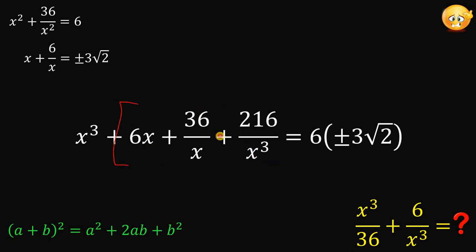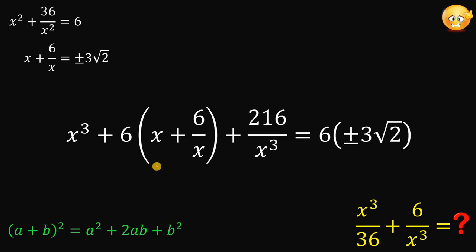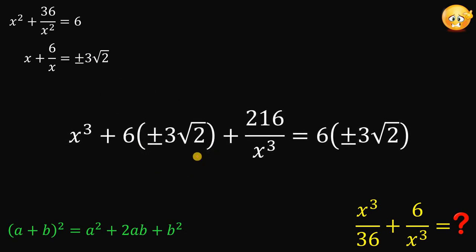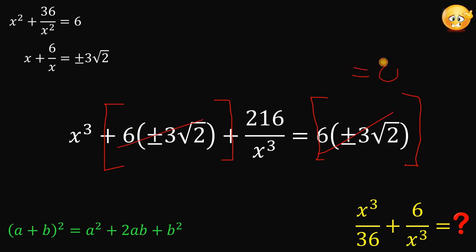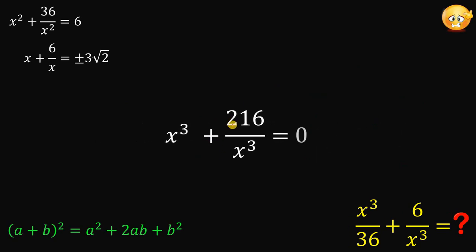Focusing on the middle two terms — 6x and 36 over x — since 36 is 6 times 6, we can factor out the common factor of 6, giving us 6 multiplied by x plus 6 over x. We know the value of x plus 6 over x, which is plus or minus 3 root 2. If we subtract 6 times plus or minus 3 root 2 from both sides, those two terms cancel out and equal 0, so x cubed plus 216 over x cubed equals 0.